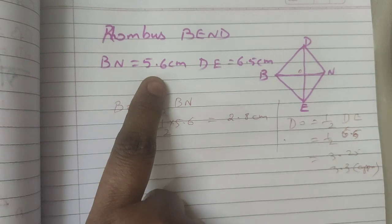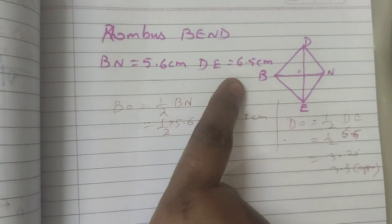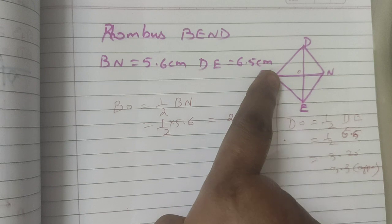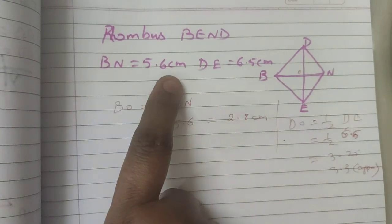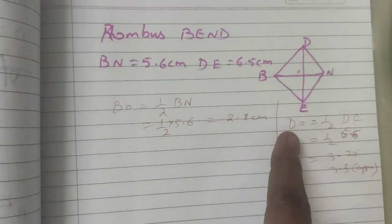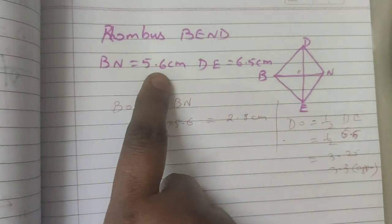BN value is given as 5.6 cm, DE value is given as 6.5 cm. So here first I will explain the properties of the rhombus.